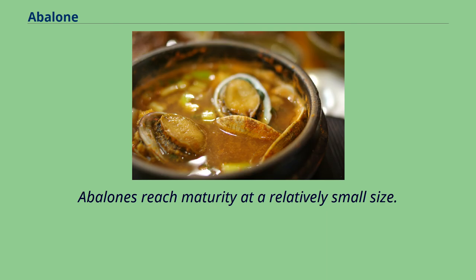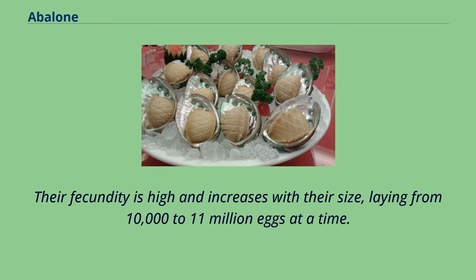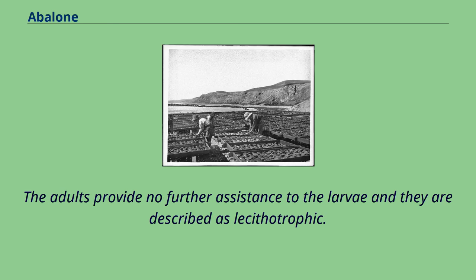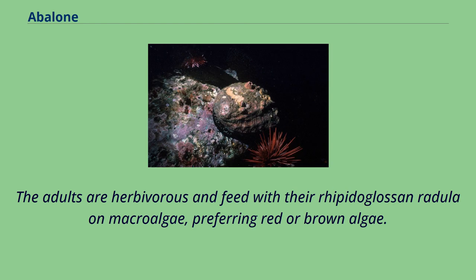Abalones reach maturity at a relatively small size. Their fecundity is high and increases with their size, laying from 10,000 to 11 million eggs at a time. The spermatozoa are filiform and pointed at one end, and the anterior end is a rounded head. The adults provide no further assistance to the larvae and they are described as lecithotrophic. The adults are herbivorous and feed with their rhipidoglossan radula on macroalgae, preferring red or brown algae.